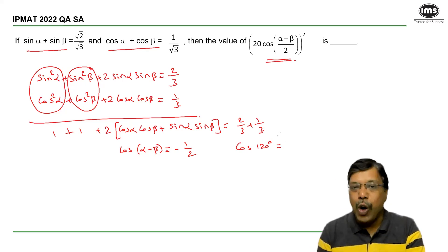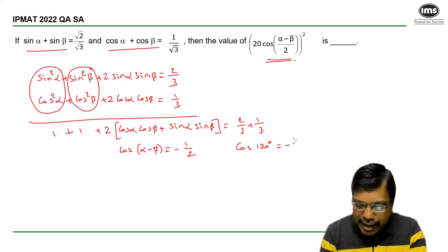So we know cos 120 degrees can be written as cos 180 minus cos 60. And since in second quadrant cos is negative, from here I can determine alpha minus beta is 120 degrees. So 20 into cos alpha minus beta by 2...